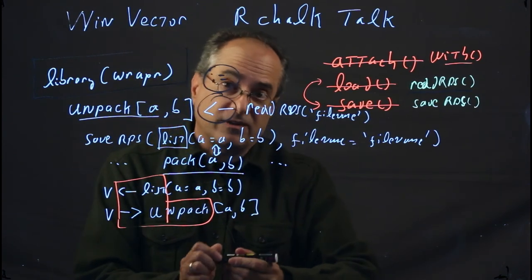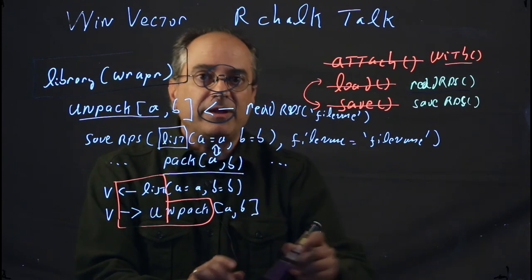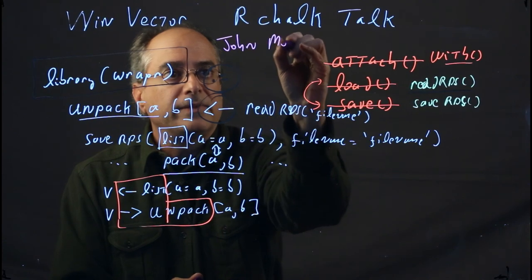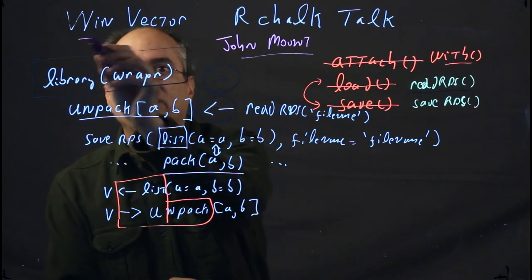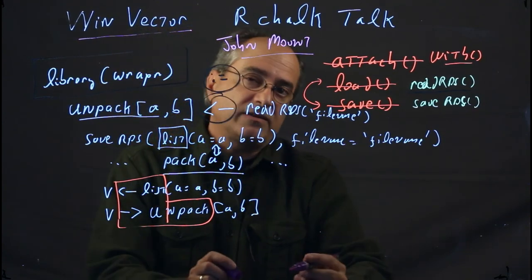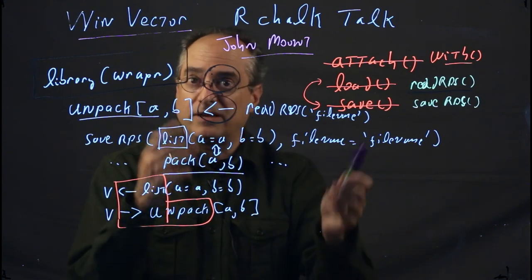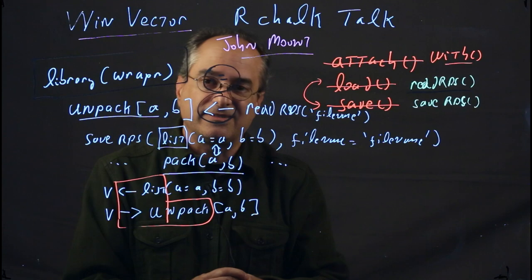My name is John Mount. As I said, I'm a researcher, consultant, and trainer at Win Vector LLC, a data science consulting, training, and research company. We'd love to be in touch with you and maybe train some of you or augment your projects. Thank you very much.